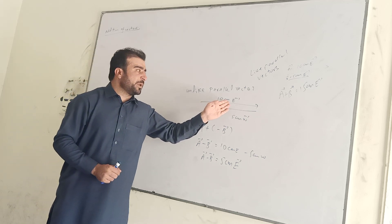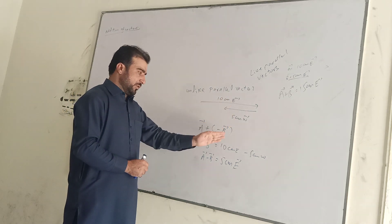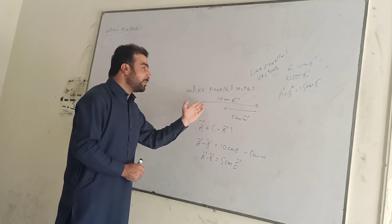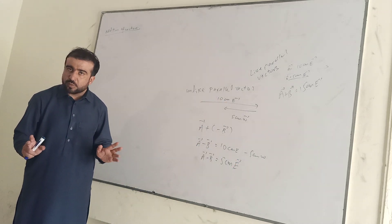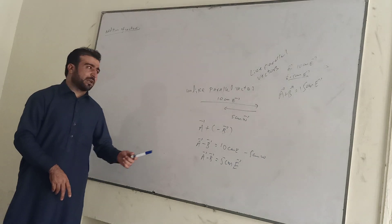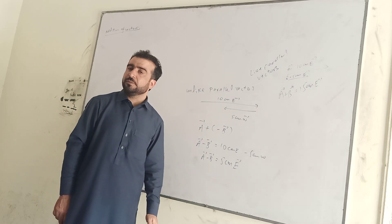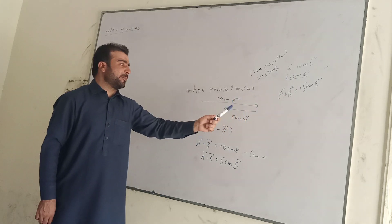10 cm east, 5 cm west. The bigger vector minus the smaller one. The direction of resultant is the bigger vector. First check if vectors are like parallel or unlike parallel.